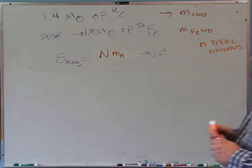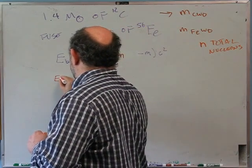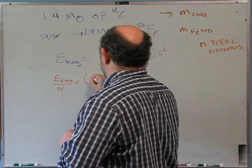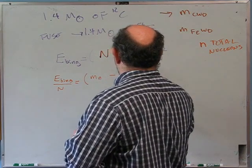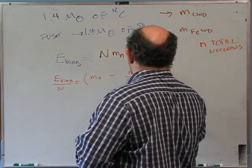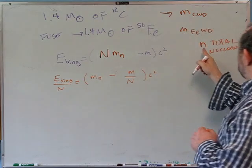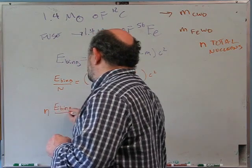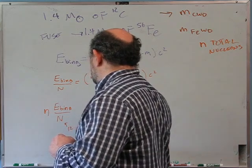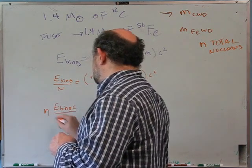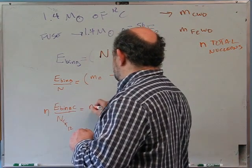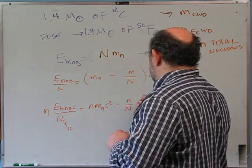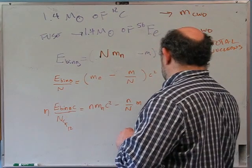Dividing binding energy by N gives binding energy per nucleon — which is what's on the table. Rearranging: N × (BE/nucleon) = N·m_nucleon·c² − m_actual·c². For carbon: N × (BE_C/nucleon) = N·m_nucleon·c² − m_CWD·c². For iron: N × (BE_Fe/nucleon) = N·m_nucleon·c² − m_FeWD·c².